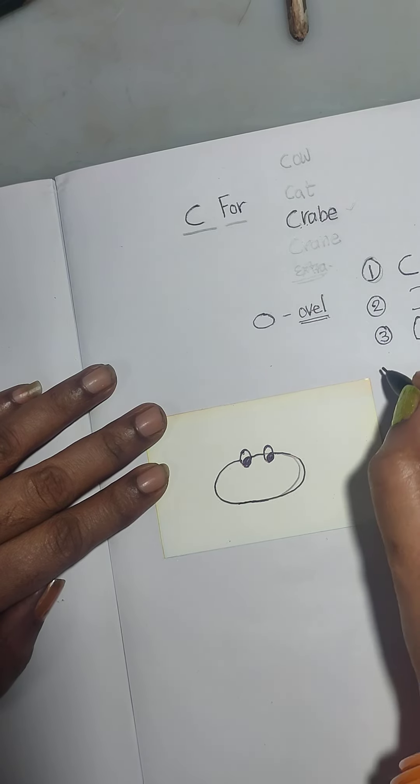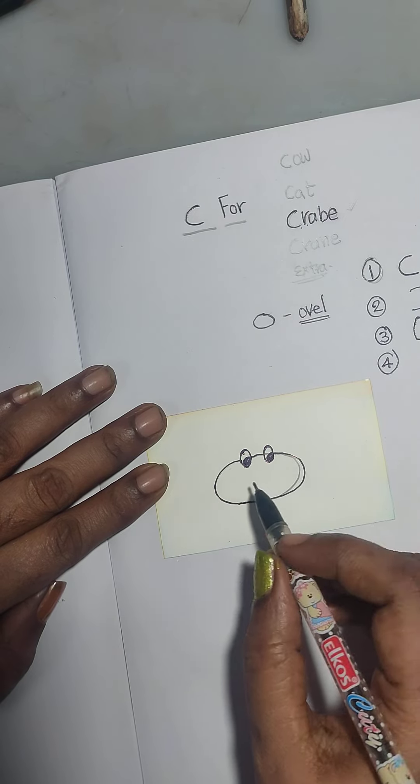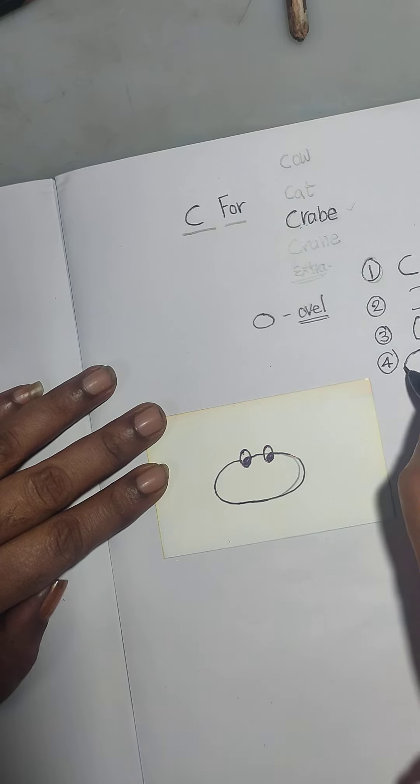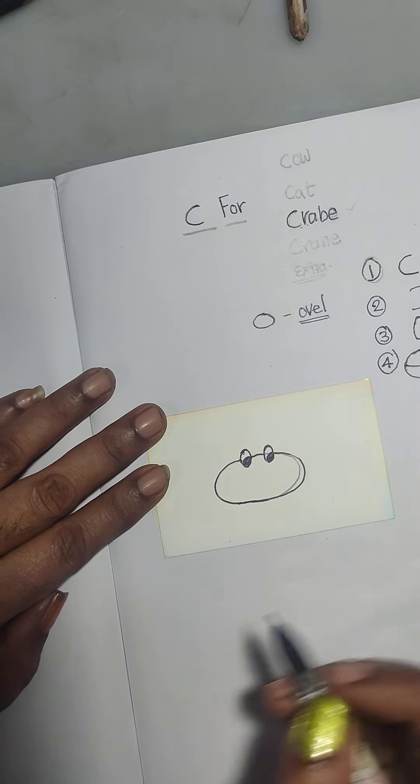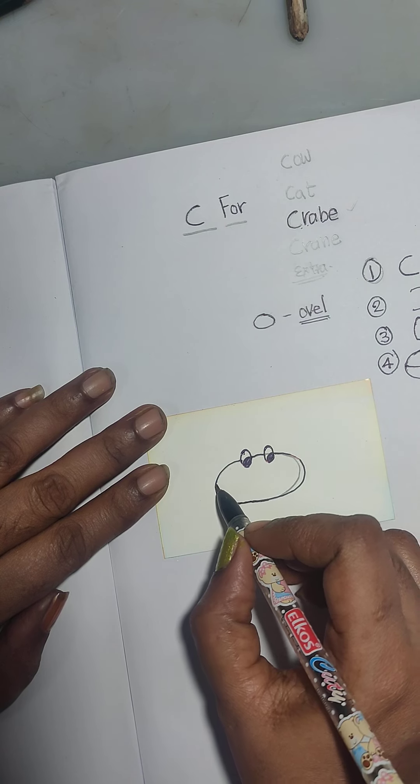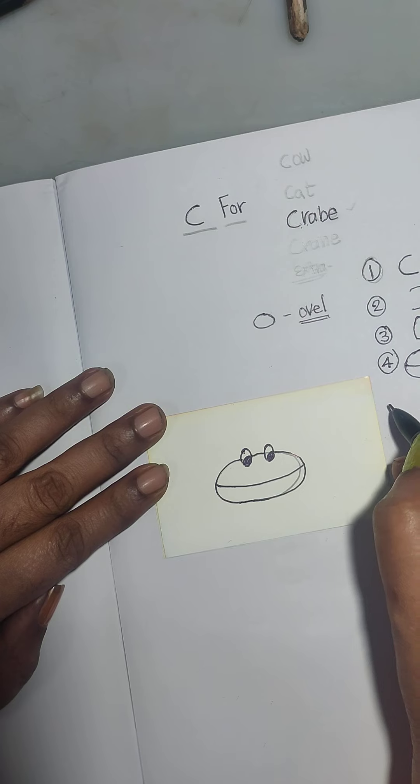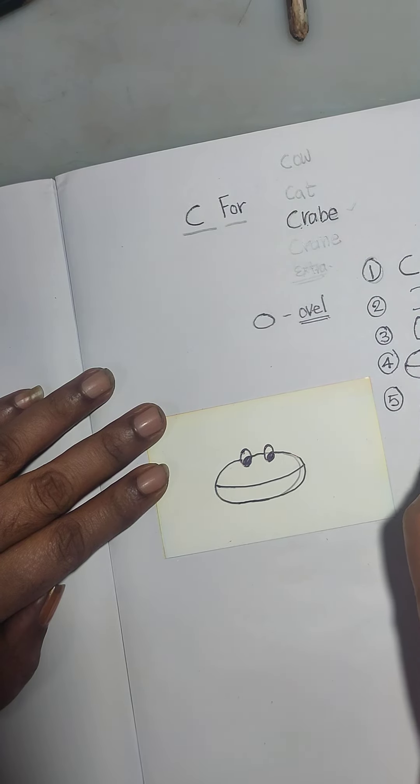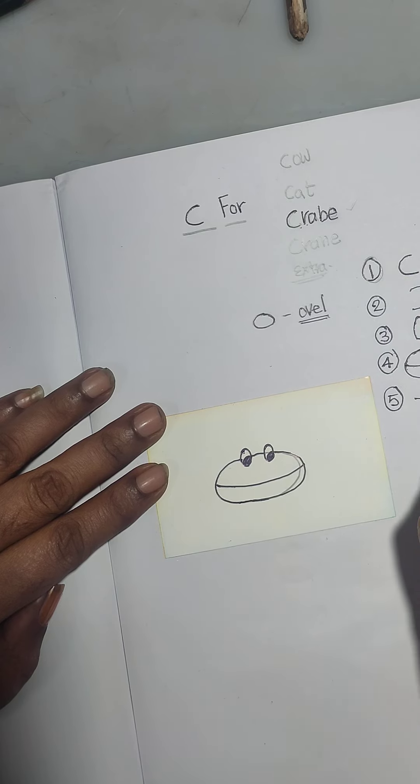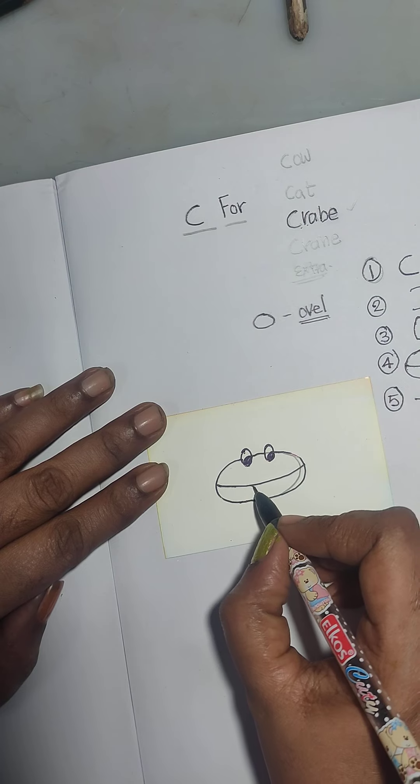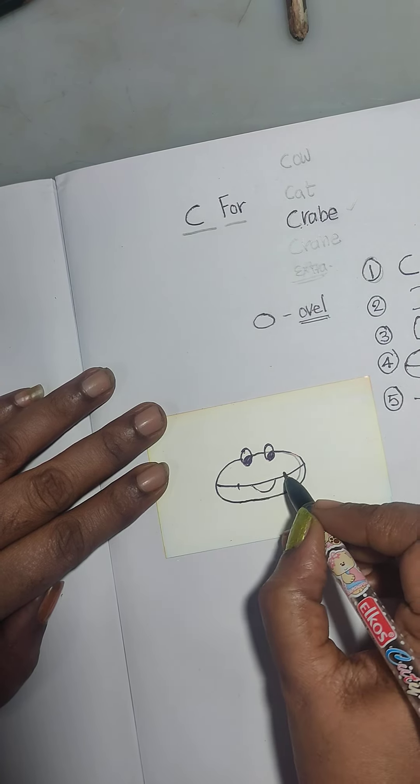Fourth step, we are taking. This is the body of crab. Next, we separate this crab's body with a line. Then I am doing here line. Okay, now. We draw our line. At the center, center of the part, small mouth for crab. Like this we added here.